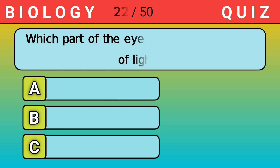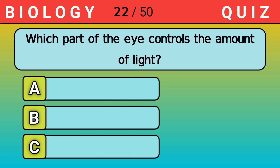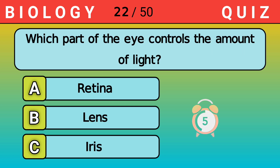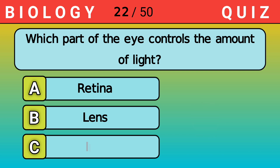Which part of the eye controls the amount of light? Answer C. Iris.